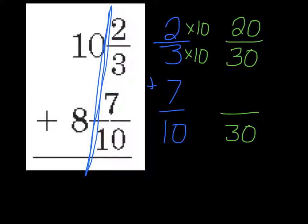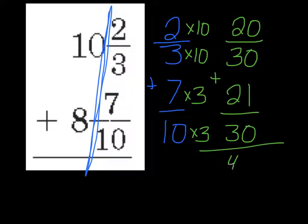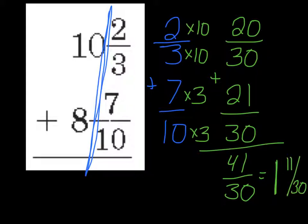For my other fraction, to get from 10 to 30, I would have multiplied times 3. So I do the same thing with my numerator. 7 times 3 is 21. And now I'm going to go ahead and add them together. 20 thirtieths plus 21 thirtieths is 41 thirtieths. Now you'll notice 41 thirtieths is an improper fraction. The numerator is larger than my denominator. So I need to rewrite it as a mixed number. So I ask myself, how many times can 30 go into 41? Well, I can take out one group of 30. If I were to take 30 away from 41, I would be left with 11 left over. So my fraction portion became a 1 and 11 thirtieths.